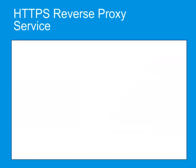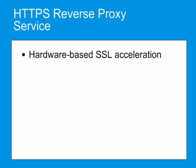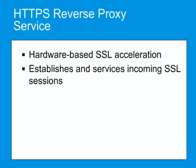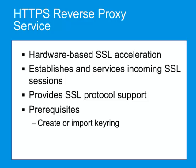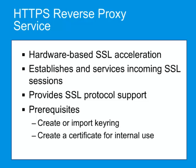In reverse proxy mode, the ProxySG is configured to manage incoming traffic. The Bluecoat HTTPS reverse proxy implementation combines hardware-based SSL acceleration with full caching functionality, establishes and services incoming SSL sessions, and provides SSL protocol support. Before creating an HTTP reverse proxy service, you must create or import a keyring, or create a certificate for internal use and associate it with the keyring.